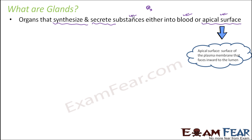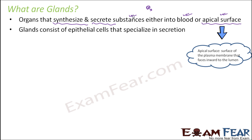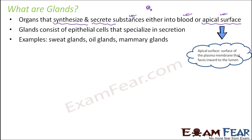The apical surface is the surface of the plasma membrane that faces inward to the lumen. Glands consist of epithelial cells that specialize in secretion — protection, secretion, and absorption are the three main functions of epithelial cells. Since secretion is one of the major functions, glands also consist of these kinds of cells. Some examples of glands in human beings are sweat glands, oil glands, and mammary glands.